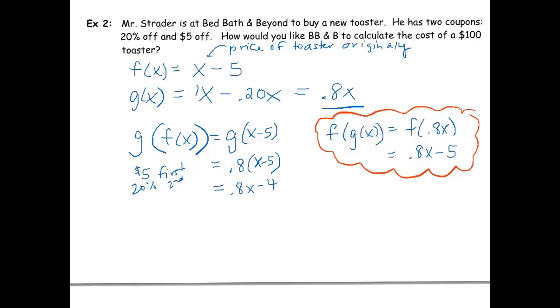So I would like, let me write a sentence here. I would like Bed Bath & Beyond to apply, let's see, which one was this? The g(x) was the 20% off. Apply the 20% off coupon first and the $5 off coupon second.